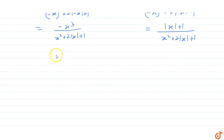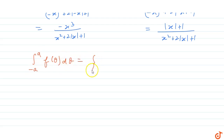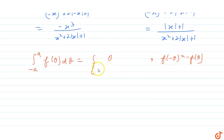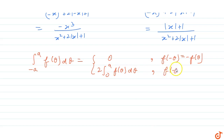Now we use the integral property: the integral from -a to a of f(θ) dθ equals 0 if f(-θ) = -f(θ), and equals 2 times the integral from 0 to a of f(θ) dθ if f(-θ) = f(θ).